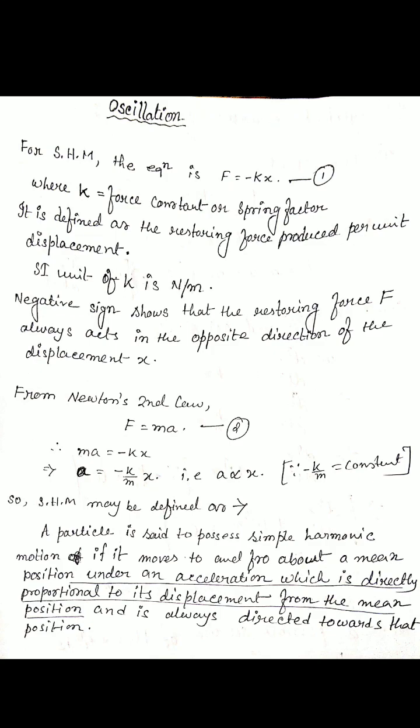We studied this equation: any oscillatory motion has the equation F equals minus k times x to the power n. SHM means Simple Harmonic Motion — the simplest motion. For the simplest case, n equals 1, so the equation is F equals minus k times x, where k is the force constant or spring factor.